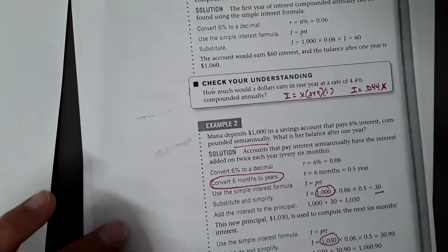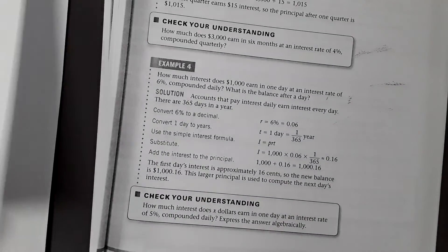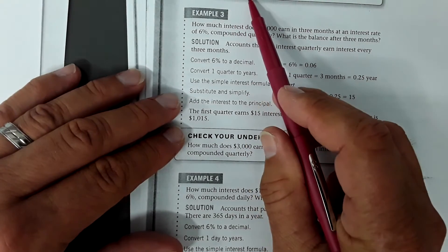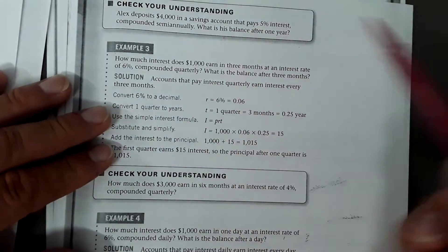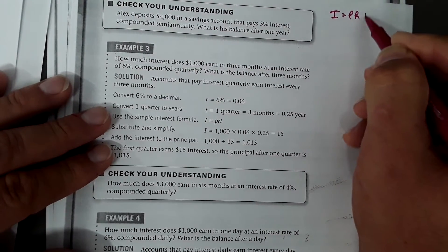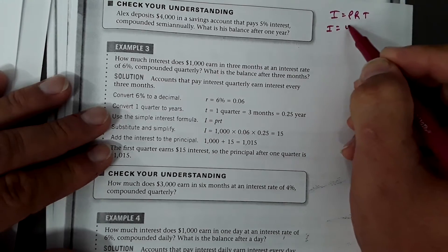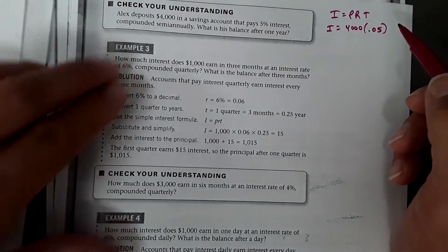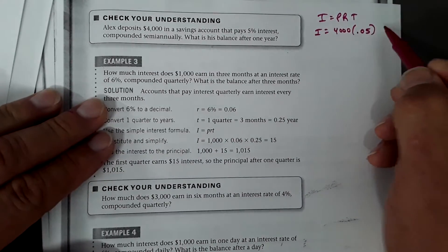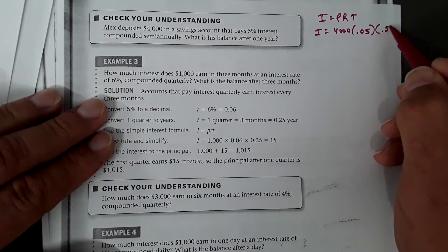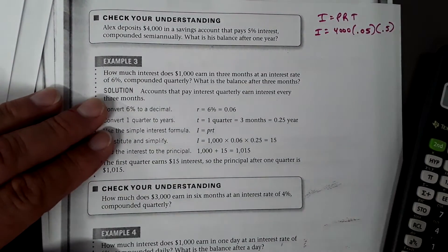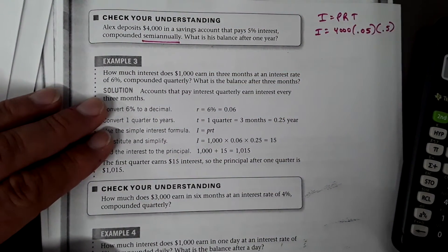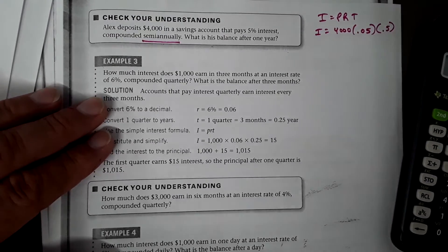Alex deposits $4,000 in a savings account that pays 5% interest compounded semi-annually. What is his balance after one year? I = PRT: principal is $4,000, rate is 0.05, and compounded semi-annually means half a year (0.5). This gives the interest earned for the first six months, which is $100.